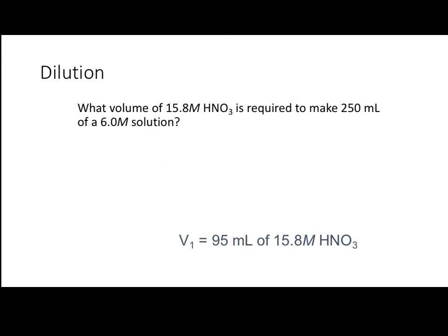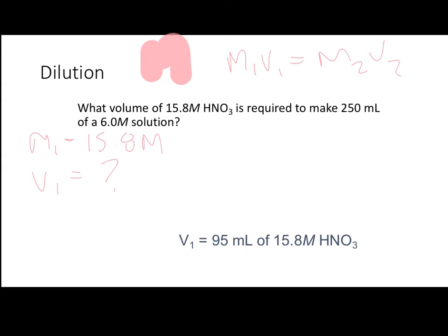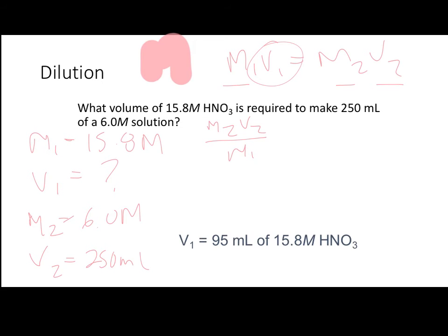This question asks: what volume of 15.8 molar nitric acid is required to make 250 milliliters of a 6.0 molar solution? Using M1V1 = M2V2, M1 = 15.8 molar and V1 is the unknown volume we want to find. M2 = 6.0 molar and V2 = 250 milliliters. We know M1, M2, and V2 — the only unknown is V1. Solving for V1: V1 = M2 × V2 / M1.